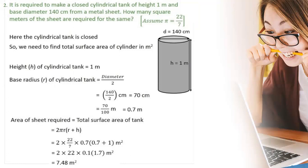Given the height is 1 meter and the radius of the cylindrical tank is equal to diameter by 2, that is 140 cm by 2 = 70 cm. Now we need to find the area in meters square, so we need to convert centimeters to meters by dividing by 100. So we get the radius as 70/100 meters, that is 0.7 meters. Now the area of the sheet is equal to the total surface area of the tank, that is 2πr(r + h). By substituting the values of π, r, and h we get 7.48 meter square.